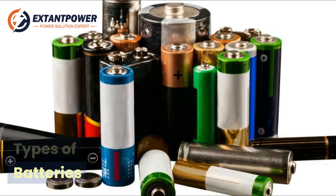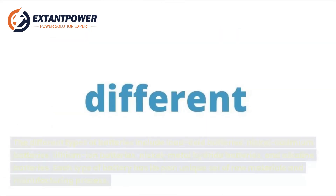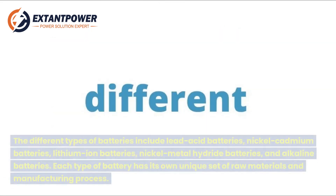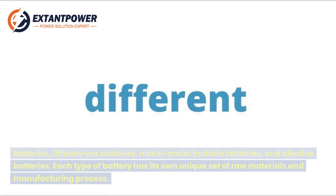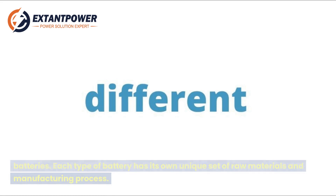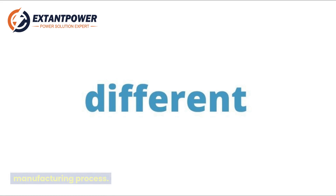The different types of batteries include lead-acid batteries, nickel-cadmium batteries, lithium-ion batteries, nickel-metal hydride batteries, and alkaline batteries. Each type of battery has its own unique set of raw materials and manufacturing process.